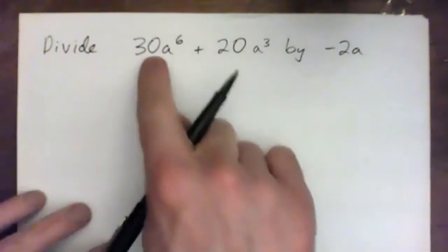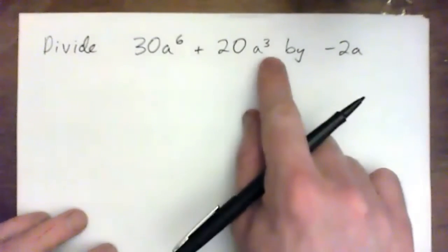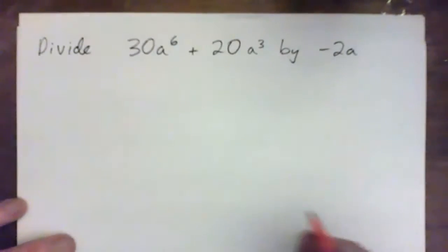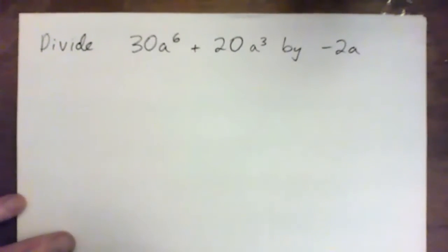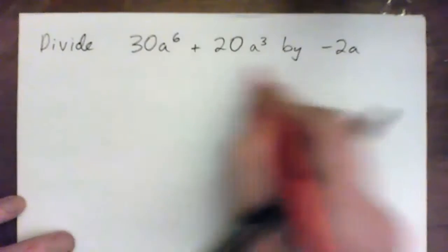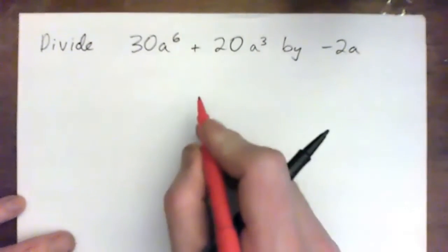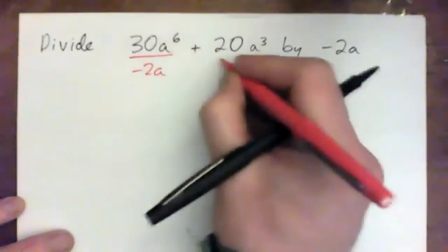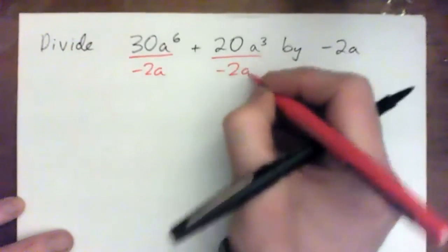So dividing 30a to the power of 6 plus 20a cubed by negative 2a. So again, we're dividing the whole thing by negative 2a, which means we divide each individual term by negative 2a, right?